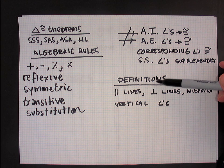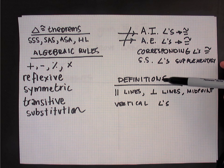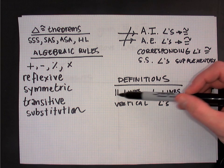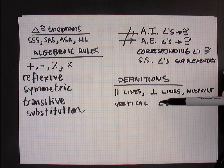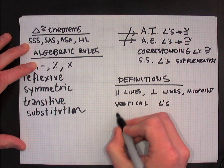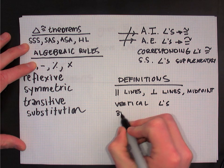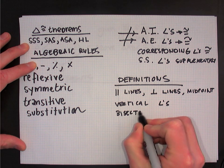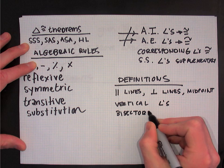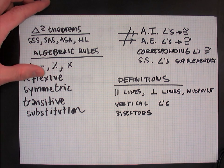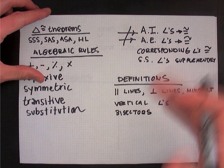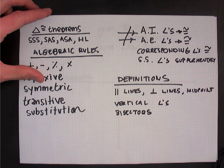Underneath that, I have some definitions — terms we've studied in the past: parallel lines, perpendicular lines, midpoint, vertical angles, and I should add bisectors. We can have both angle bisectors and segment bisectors, and a bisector simply cuts either an angle or a segment in half. That's just a short list of things we can use for reasons when we write our two-column proofs.